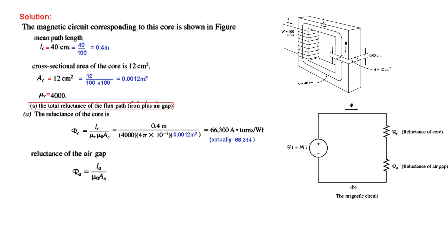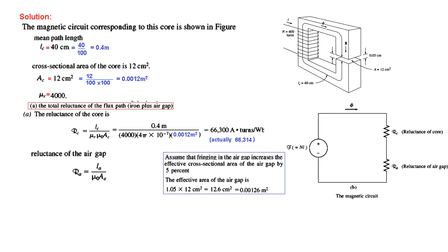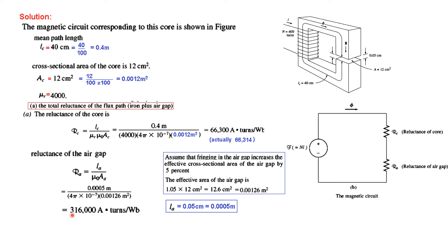Now we come to the reluctance of the air gap. Since there is no core material, the mu_R element is eliminated. The gap length is 0.05 cm, which we convert to meters to get L_A. The area of the air gap: it should have been 12 cm², but due to fringing there is a 5% increase, so we multiply by 1.05, giving 0.0126 m². Plugging in all values with mu_0, the reluctance of the air gap is 316,000 ampere-turns per Weber.